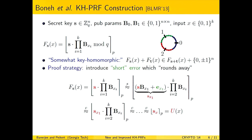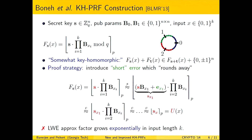We then invoke LWE and continue the proof in a GGM-style way by pushing bits from the input out into the seed, thus randomizing and continuing. However, the error is multiplied by a product of roughly k binary matrices, and therefore the LWE approximation factor grows exponential in the input length k. This is essentially what gives them their worse parameters and key sizes.